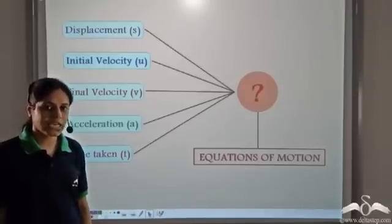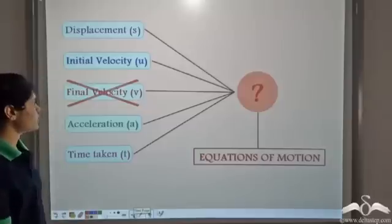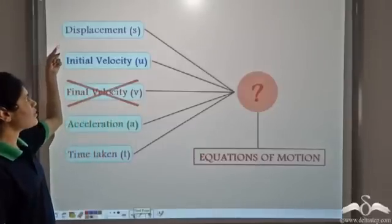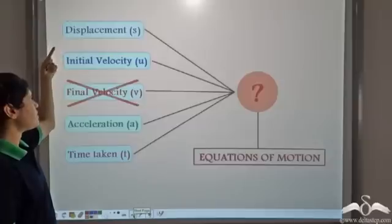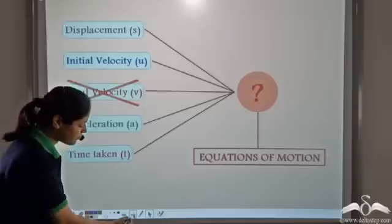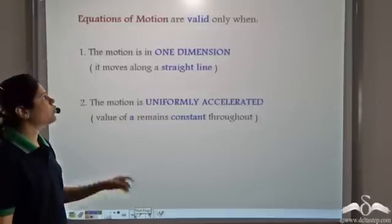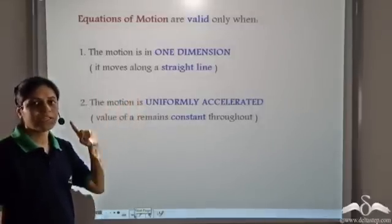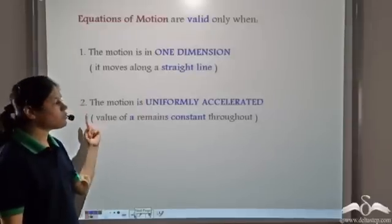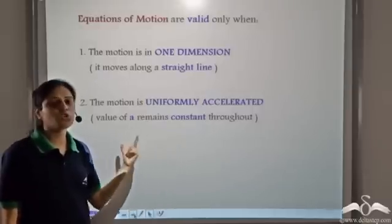Let us derive the second equation of motion. For deriving the second equation of motion, we ignore the final velocity and we try to find a relation between displacement, initial velocity, acceleration and time taken. Equations of motion are valid only when the motion is in one dimension — that is, the body is moving along a straight line — and the motion is uniformly accelerated, that is the value of acceleration is constant throughout.